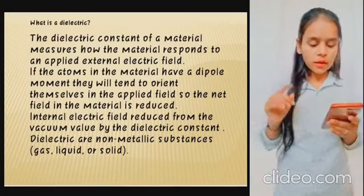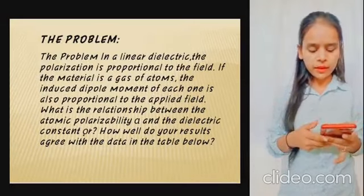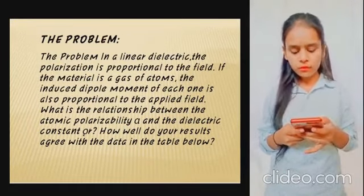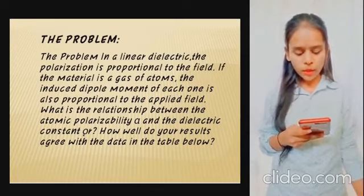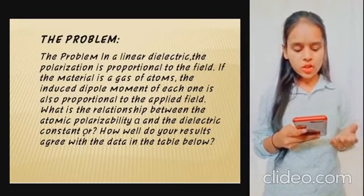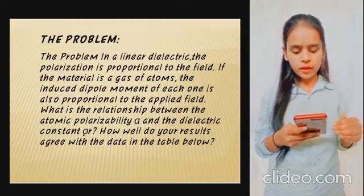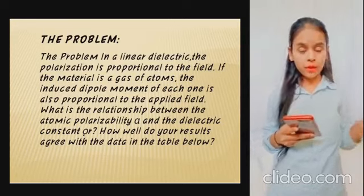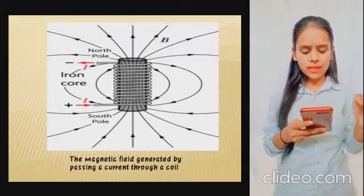The dielectric can be a gas, liquid, or solid. In a linear dielectric, the polarization is proportional to the field. If the material is a gas of atoms, the induced dipole moment of each atom is also proportional to the applied field. The relationship between atomic polarization and the dielectric constant is examined, and results are compared with reference data. The magnetic field is generated by passing current through a coil.